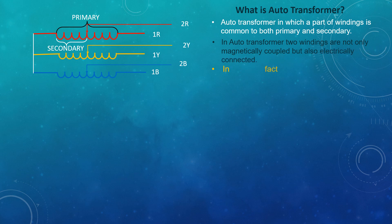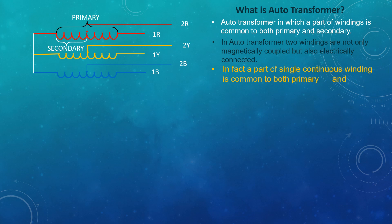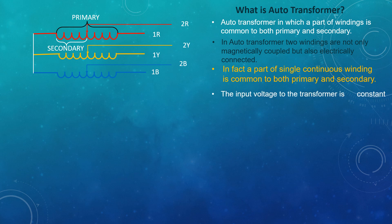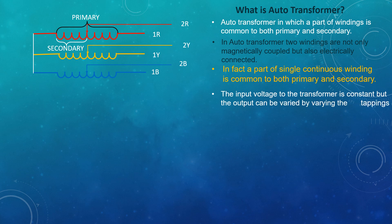In fact, a part of a single continuous winding is common to both primary and secondary. The input voltage to the transformer is constant, but the output can be varied by varying the tappings.